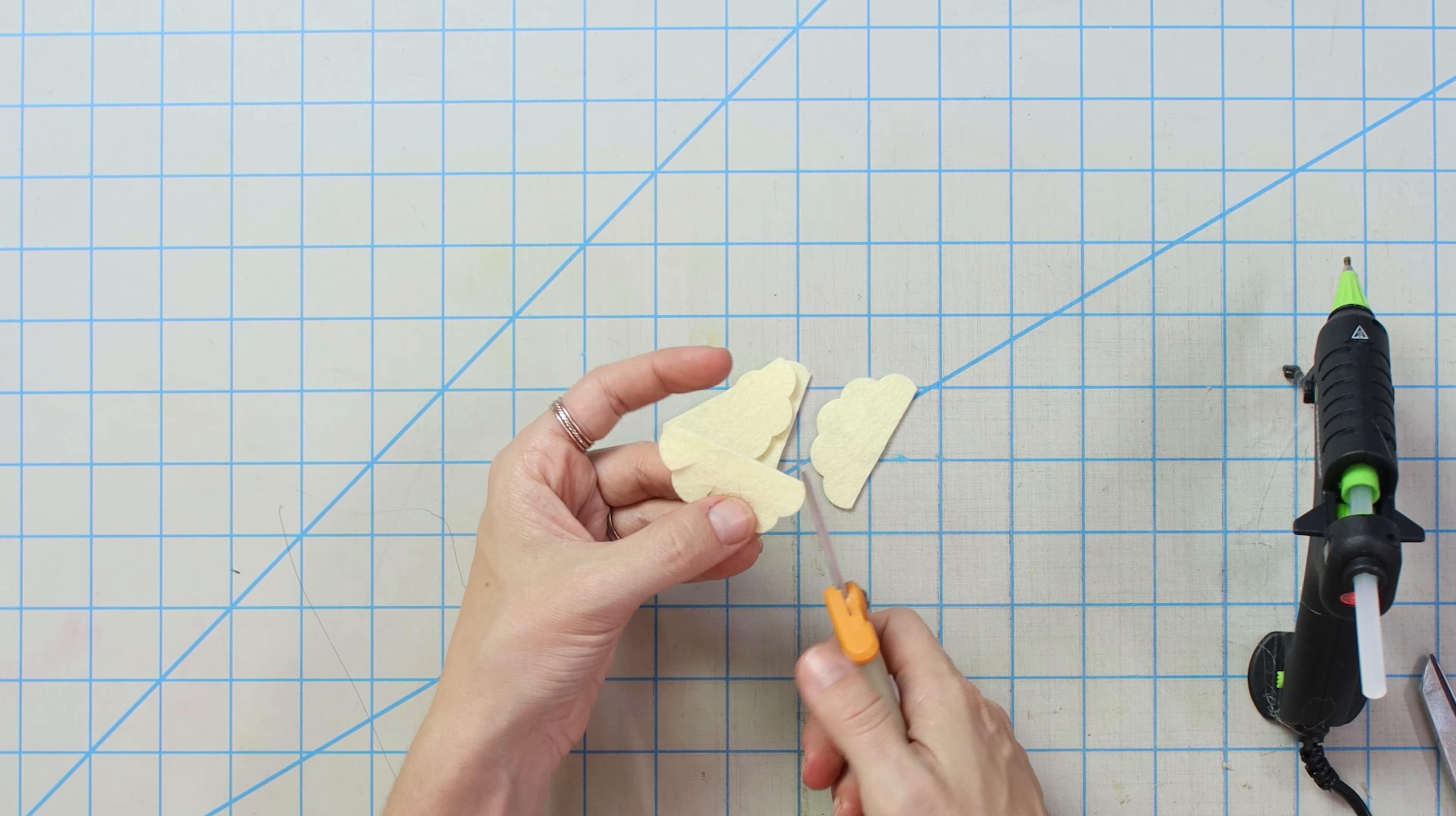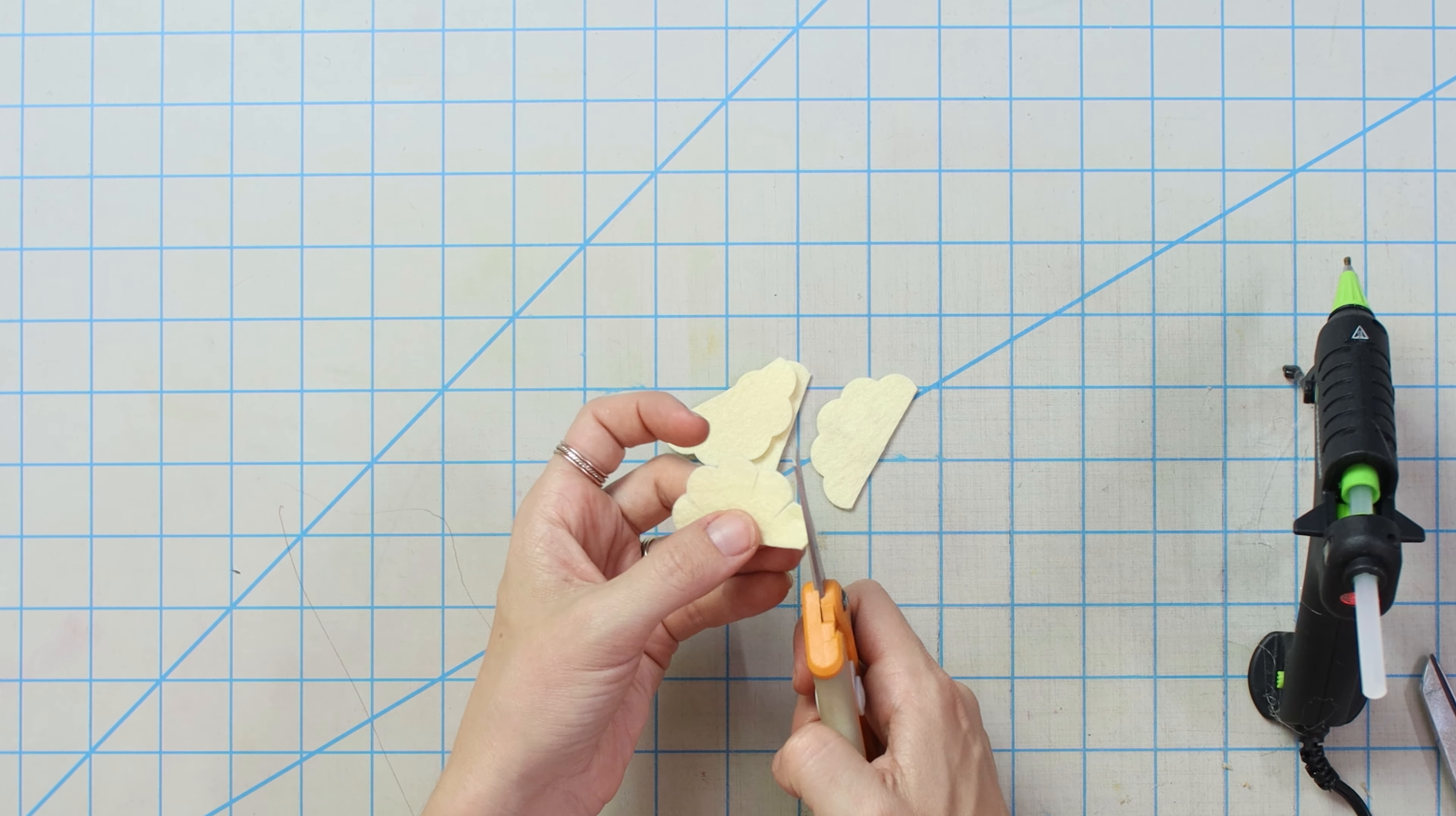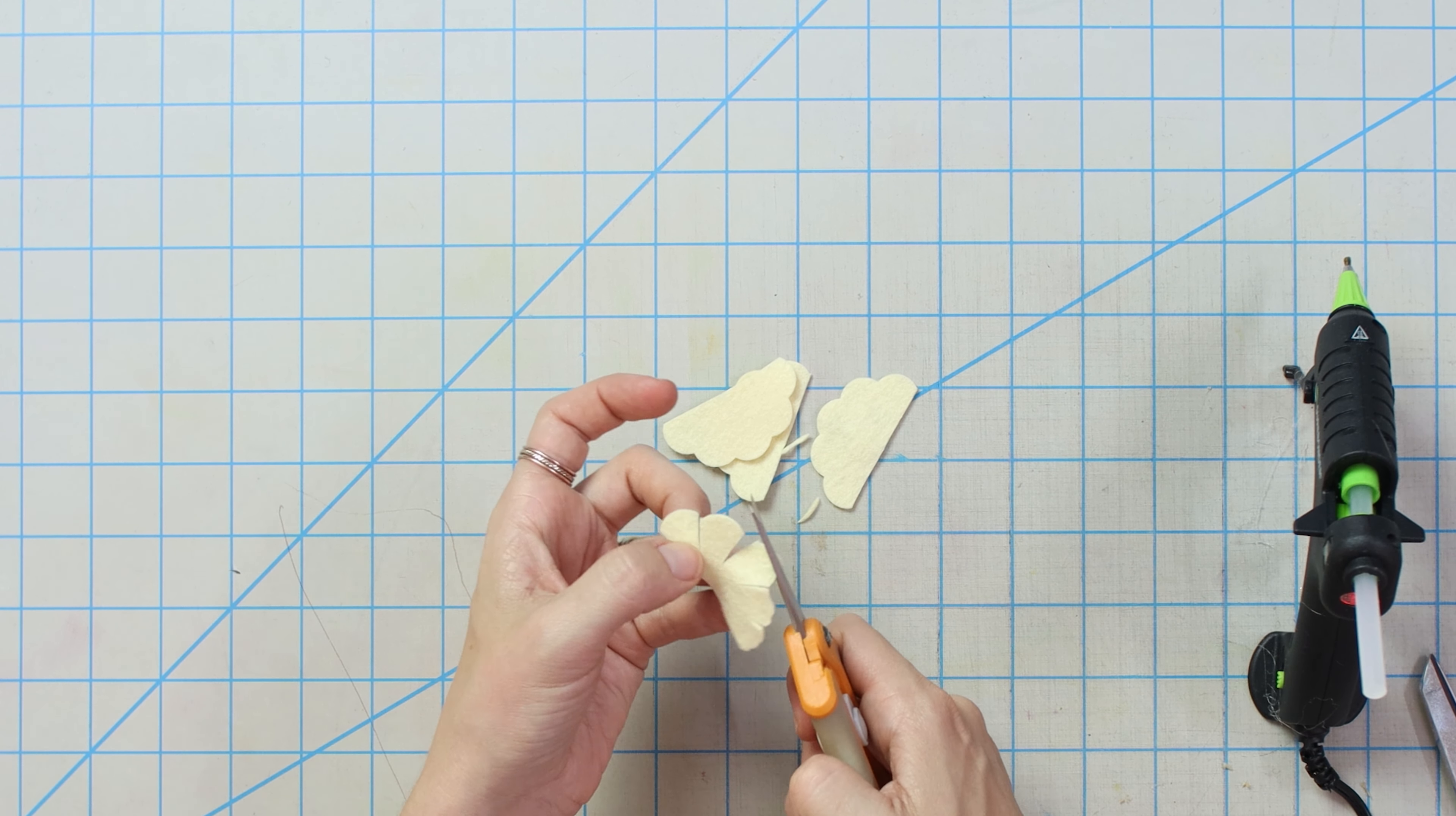We're then going to make little cuts into each valley of our petals. And we're not going all the way down. We're leaving about a good chunk of material at the bottom. And that's where we're going to use to glue. So be sure that that's there.